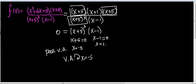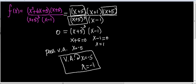For x equals 1, let's check in the numerator. Plugging in 1 gives 6 in the first factor, 2 in the second factor — 6 times 2 is 12 — and 6 in the third factor, so 12 times 6 is 72. I did not get zero, which means it's a vertical asymptote. So I have a vertical asymptote at x equals negative 5 and x equals 1.